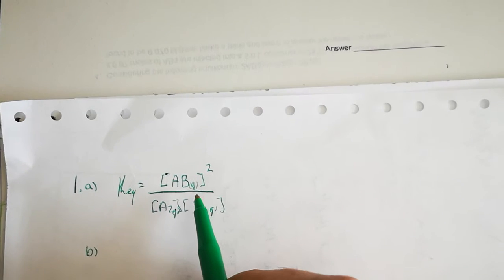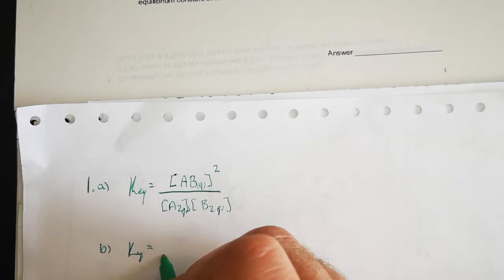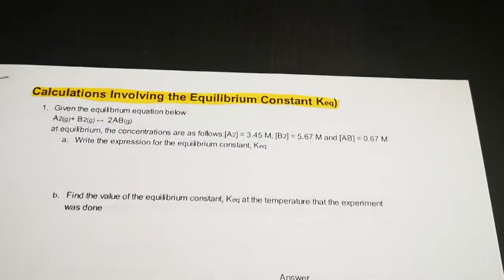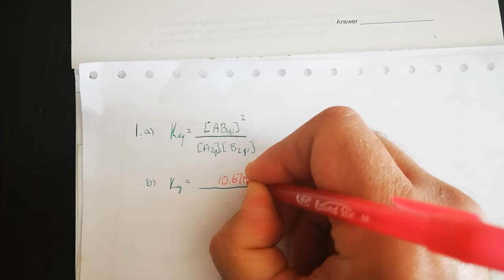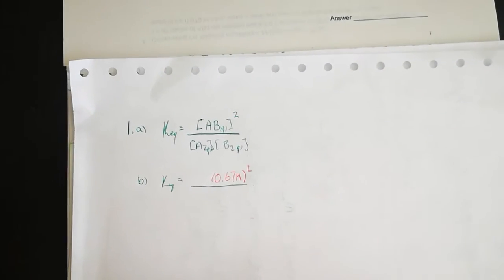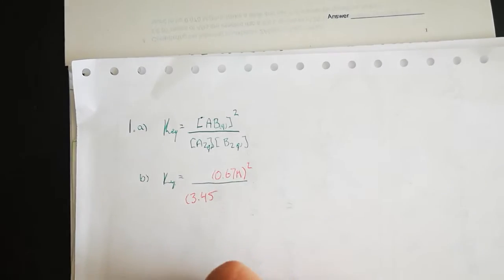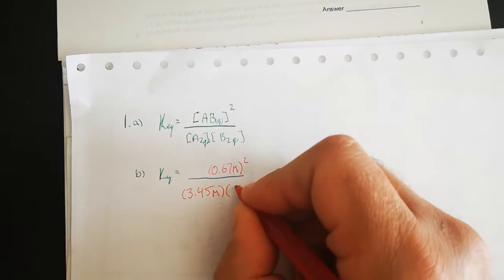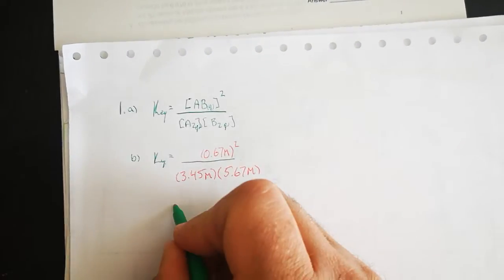So for question number 1b, we're given the values for the concentration of AB - just substitute it in here. So AB is given as 0.67 molarity and that's squared. The concentration of A2 is given as 3.45 molarity, and the concentration of B2 is given as 5.67 molarity.